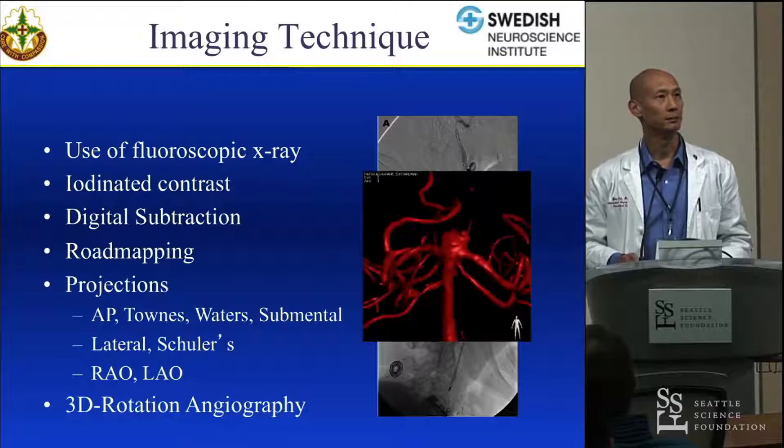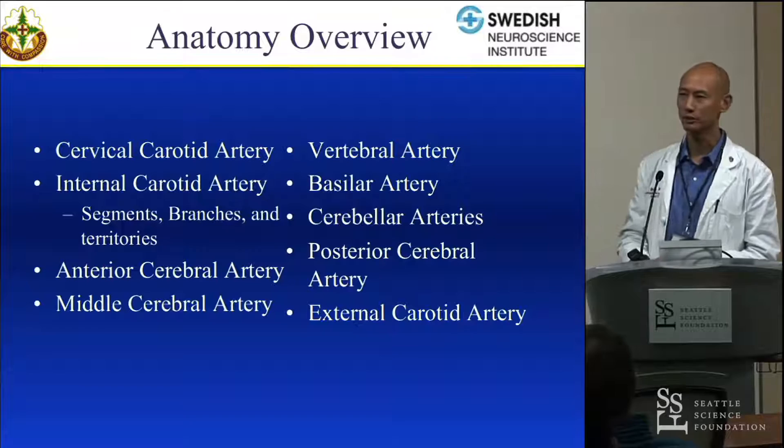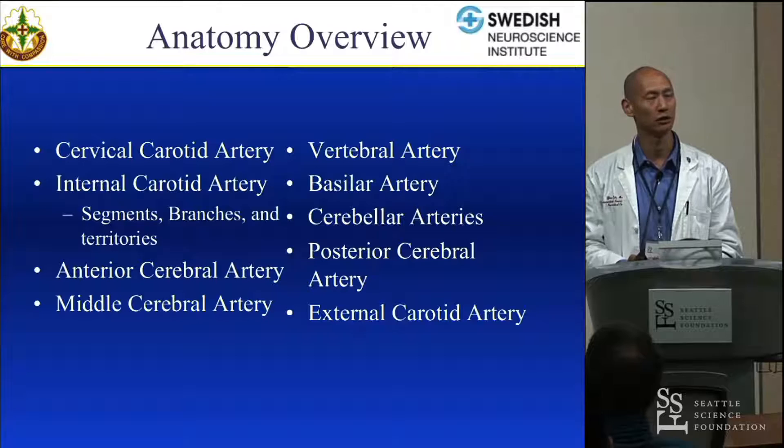That's a picture of a 3D rotational angiography image. So this is an overview of what we're going to talk about today — mostly ICA and MCA, but I am going to touch on all of these vessels as well as anomalies and syndromes associated with them.